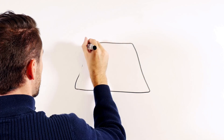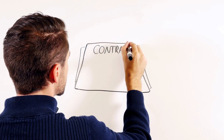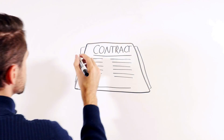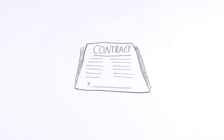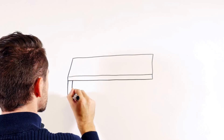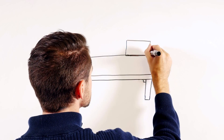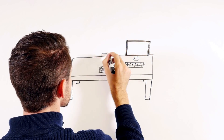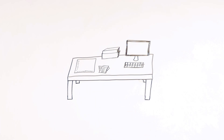Once the school district awards the project to a construction company, the build stage can begin. The construction company, in turn, awards the contracts for the materials and labor they need to secure. Once a contract hardware distributor, as a subcontractor, gets awarded the job, this distributor details the job, identifying the exact products for every opening on the job. The distributor will order these materials from the door and hardware manufacturers, timing the materials' arrival to the project schedule.